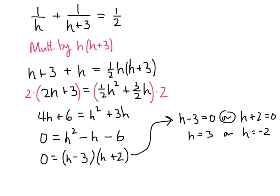But remember, h was how many hours it took Payton to do the job, so a negative answer doesn't make sense in this problem. So we'll throw out that negative two, and we get an answer of h equals three. The answer is in hours, because that was how many hours it would take Payton to do the job on his own.